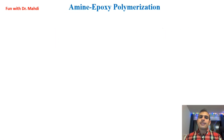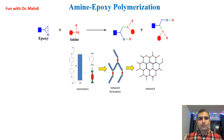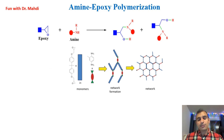Amine-epoxy is another type of click chemistry reaction that can be used for polymerization. It's a reaction between epoxy and amine, and again we can call it ring opening because after this reaction we don't have the ring anymore. For example, on the surface of one monomer we have two epoxy groups, and on the surface of another monomer we have two amine groups.